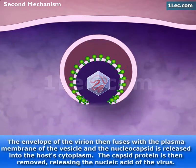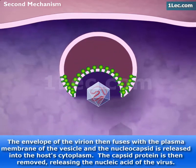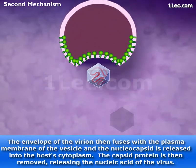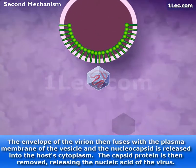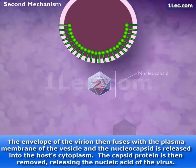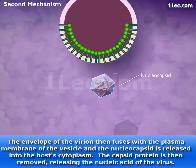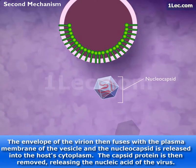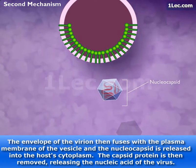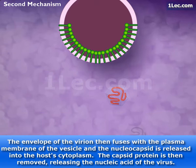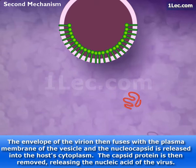The envelope of the virion then fuses with the plasma membrane of the vesicle, and the nucleocapsid is released into the host's cytoplasm. The capsid protein is then removed, releasing the nucleic acid of the virus.